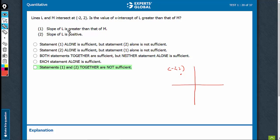Statement 1 says that slope of L is greater than that of M. Let's first try positive slopes, case of positive slopes. What do we get? The slope of L is greater than slope of M and we see that intercept of L is also greater than intercept of M.